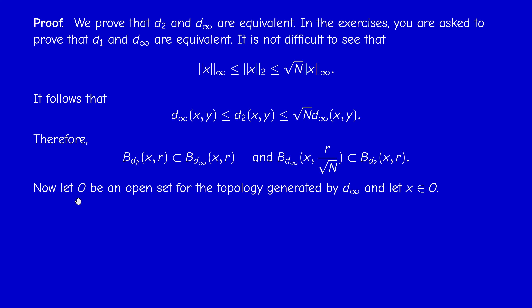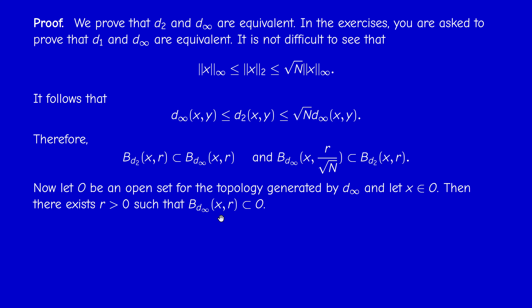Now to prove T_{d₂} = T_{d∞}, we use double inclusion. Take O in T_{d∞}, meaning O is open for d∞. For any x in O, there exists a ball for d∞ of center x and radius r contained in O. By the inclusion B_{d₂}(x,r) ⊆ B_{d∞}(x,r), if the bigger ball is in O then the smaller ball is in O. So we found a ball with respect to d₂ centered at x contained in O, meaning O is open for d₂. Thus T_{d∞} ⊆ T_{d₂}.